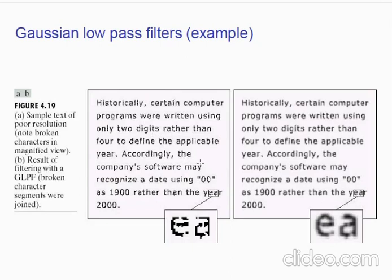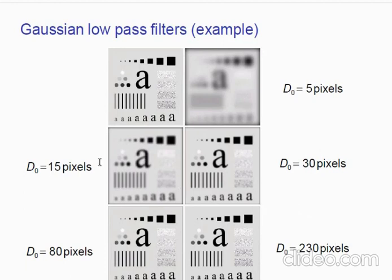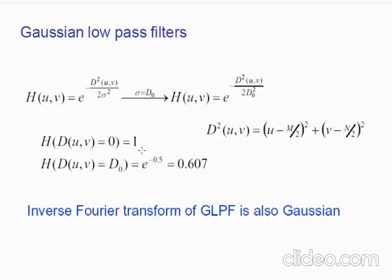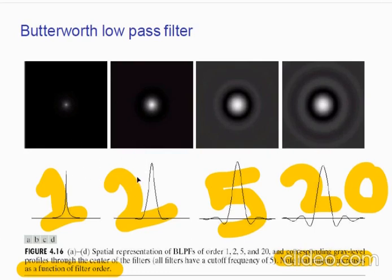We can see some broken writing in an image; applying a Gaussian filter performs smoothing and the broken edges are joined. To summarize low pass filtering: Gaussians are the best among the three categories because they produce no ringing effects, and with a medium cutoff frequency they give pretty good blurring. Butterworth filters are good at lower orders but become problematic at larger orders.